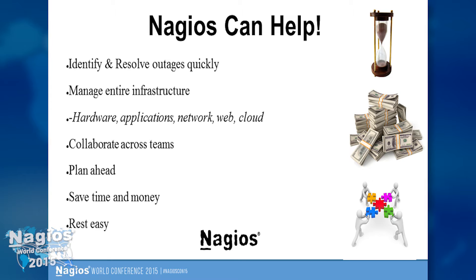Nagios can help you identify and resolve outages quickly. Just finding out that there is an issue makes it much quicker and easier to actually resolve it. One of the graphics in the opening keynote showed that the average cost of downtime based on a study last year is $200,000 an hour. I've worked with clients in the financial sector where the average cost of downtime was about $50,000 a second — no joke. Talk about a tight check interval. Identifying and resolving quickly is going to help you save time and money.